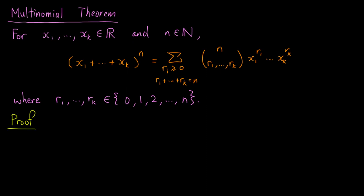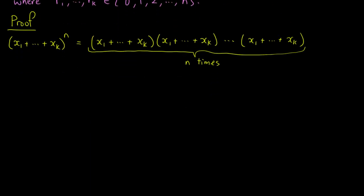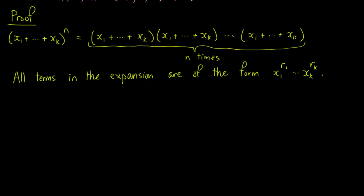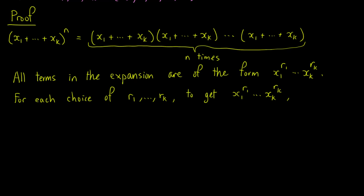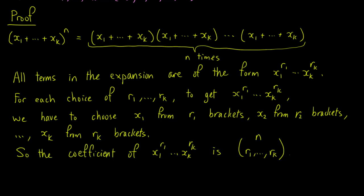The proof of this result is very similar to the proof used in the binomial theorem. We first expand the left-hand side into a product of N terms, where each term is the sum from x1 up to xk. We observe that all terms in the expansion are of the form x1 to the R1 up to xk to the Rk. For each choice of R1 up to Rk, in order to get x1 to the R1 up to xk to the Rk, we have to choose x1 from R1 of the brackets, x2 from R2 of the brackets, until we choose xk from the remaining Rk brackets. In other words, the coefficient of x1 to the R1 up to xk to the Rk is the number of partitions of N into subsets of sizes R1 up to Rk, and this completes the proof.